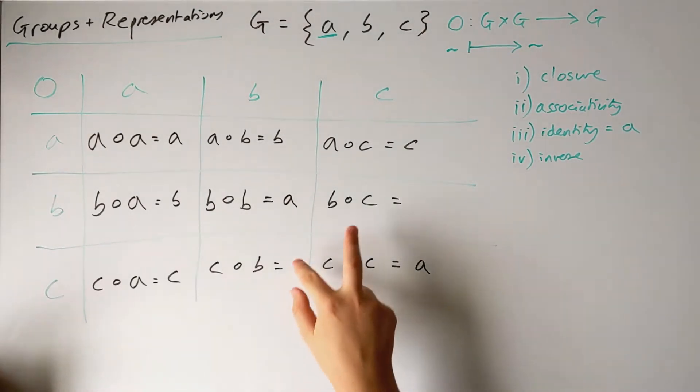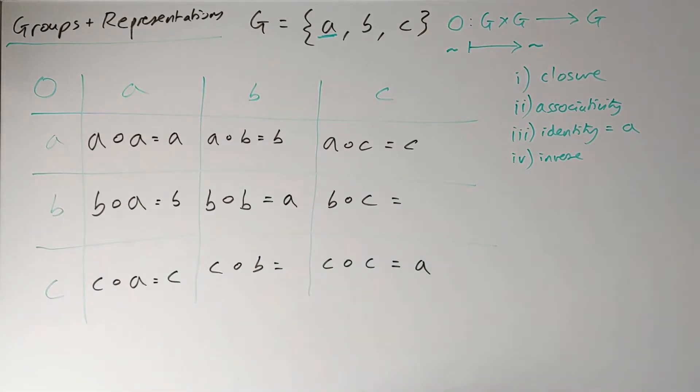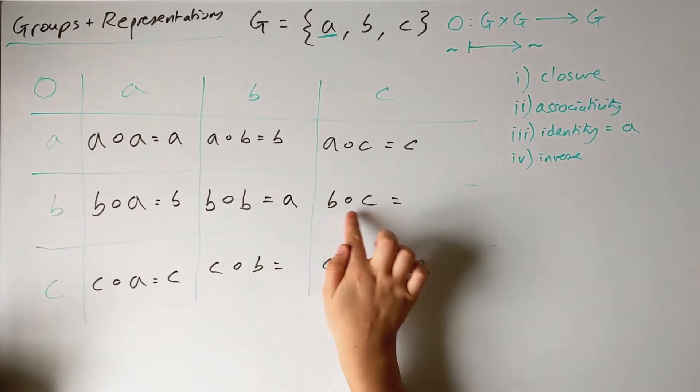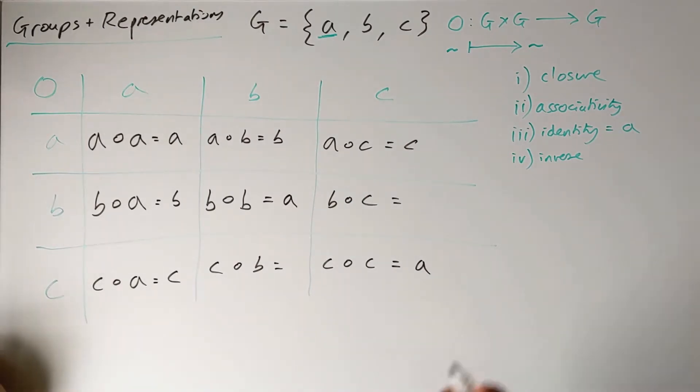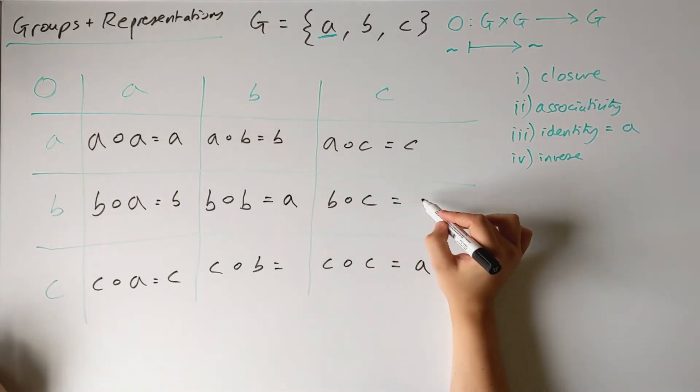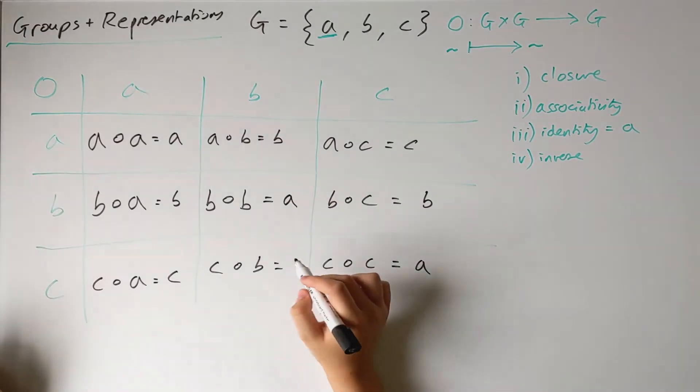We only have two slots left to fill here. I need to define what b compose c and c compose b are. These in principle could be anything as long as it's a, b, or c. I'm going to make a choice: b compose c is b, and c compose b I'll say is b as well.